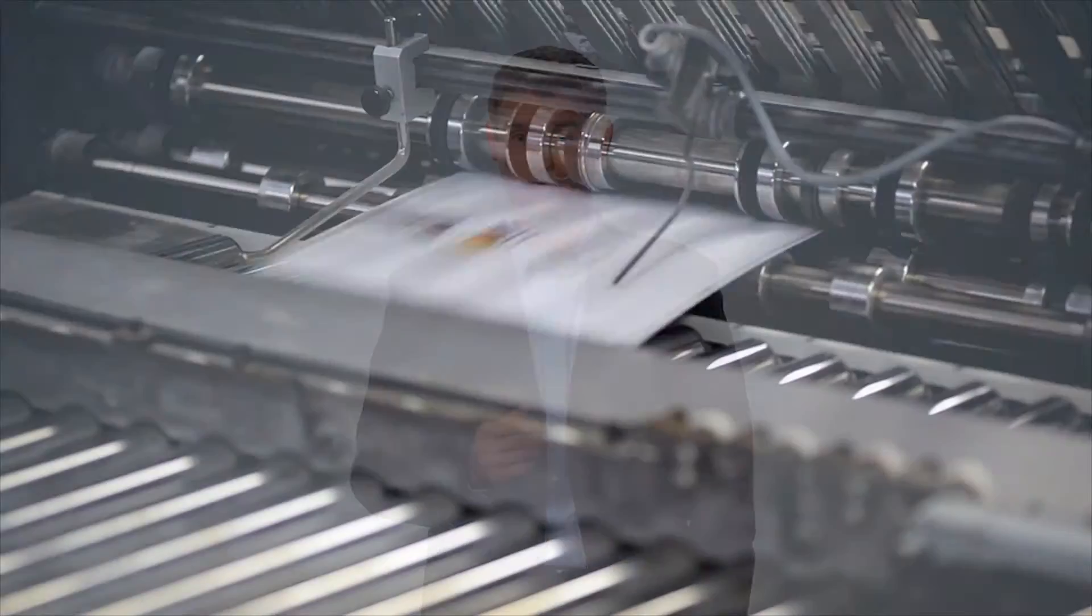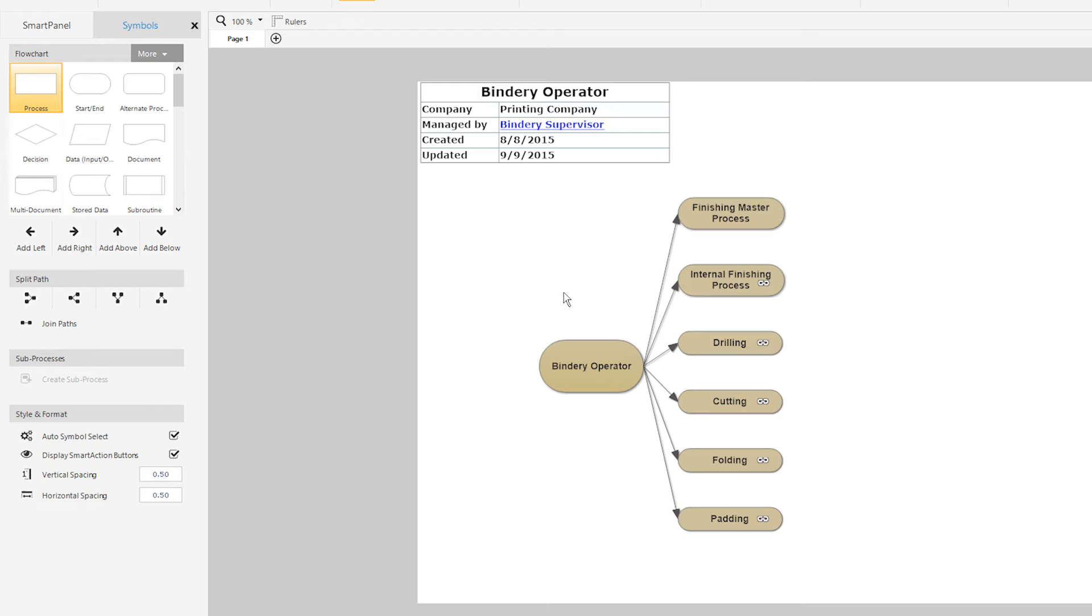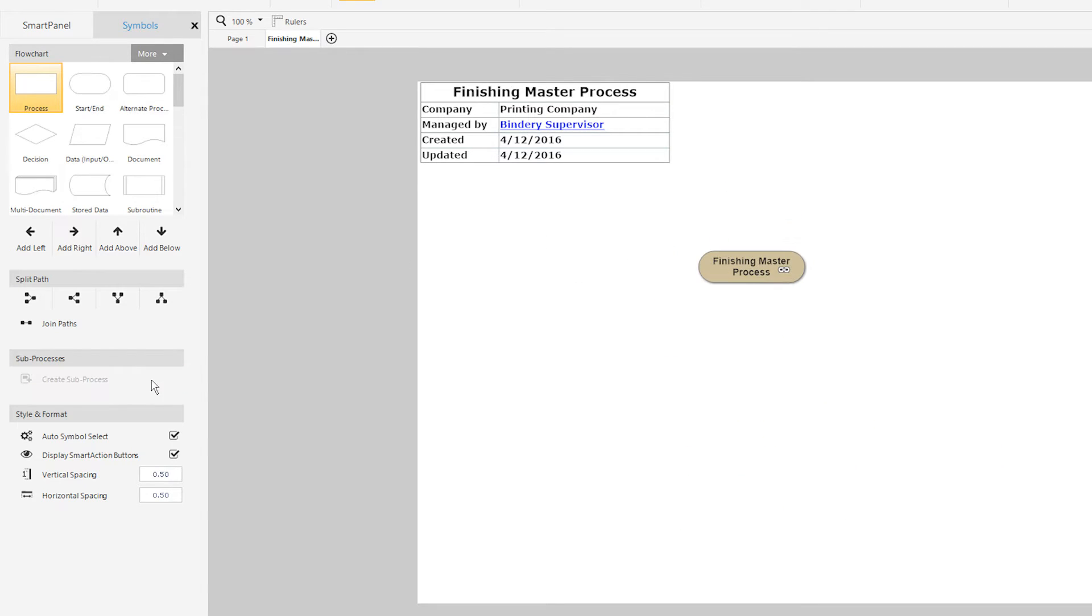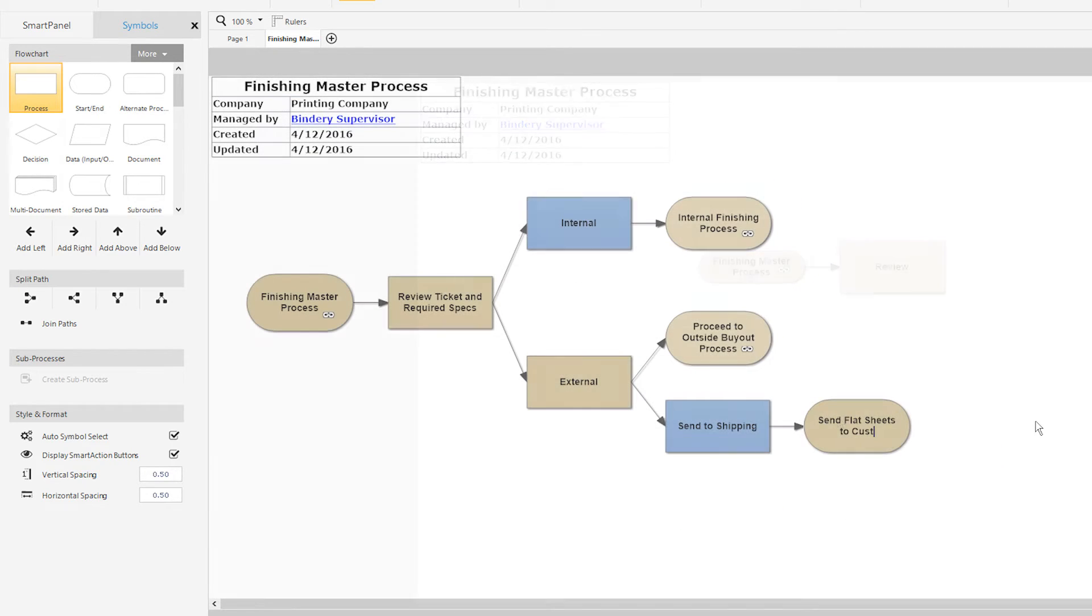Let's take a look at a real-world example, L&L printers, to see how it works. Suppose L&L printers needs to train a new employee, in this case, a bindery operator.